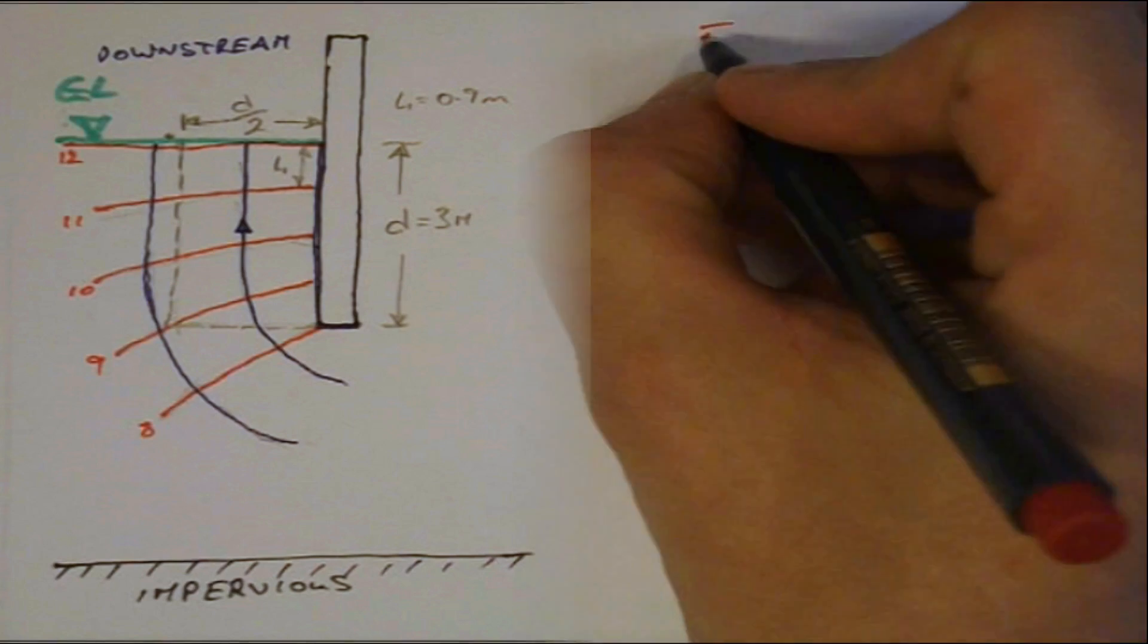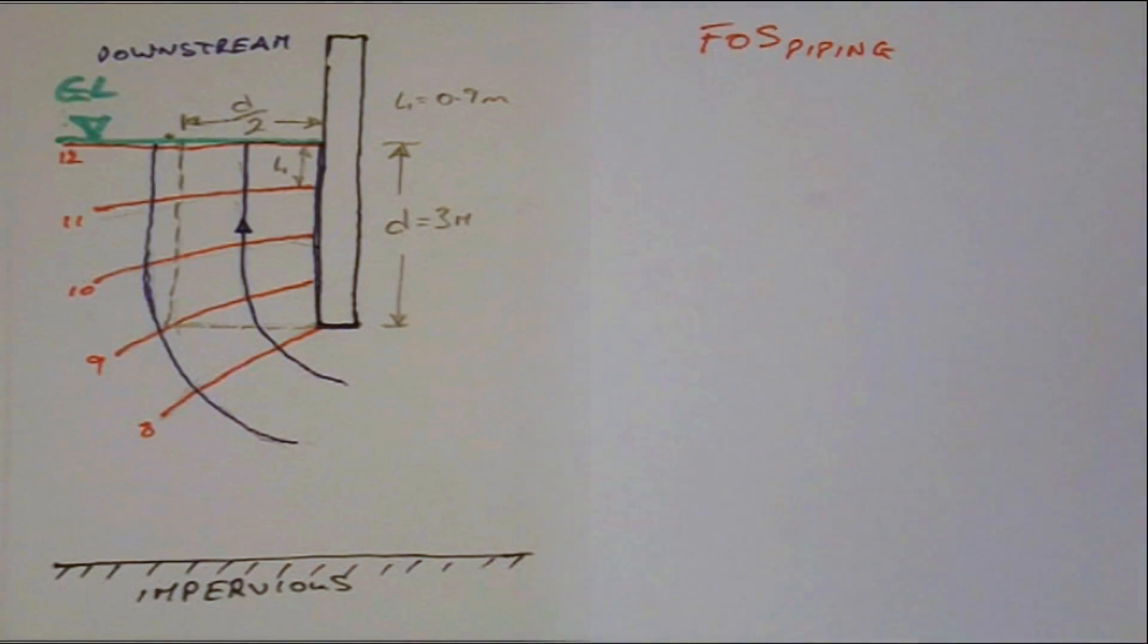Next, we calculate the factor of safety against piping. Consider the prism of soil shown.